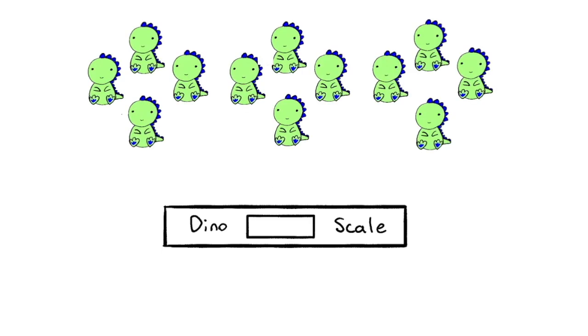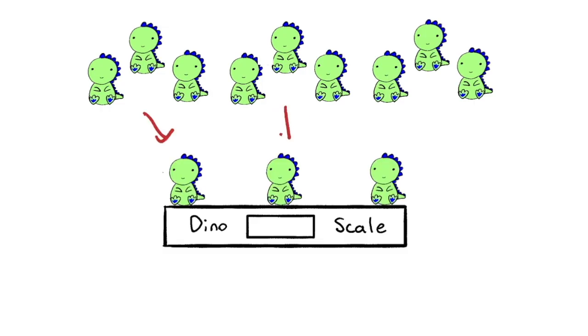So to start, let's imagine we have our 12 dinosaurs. What are some initial strategies? We could try weighing one dinosaur from each family.